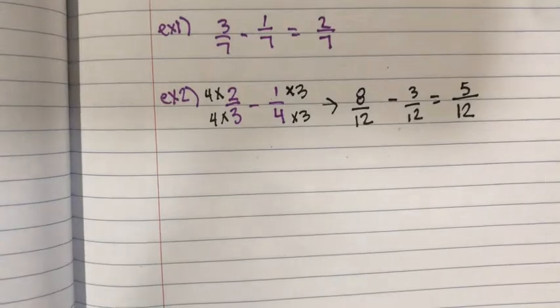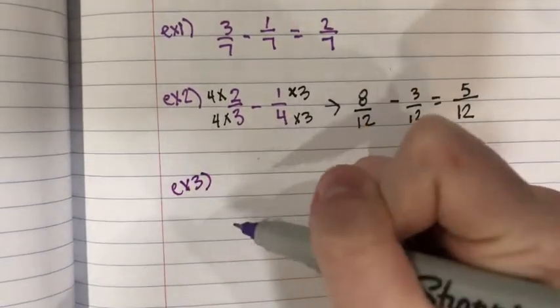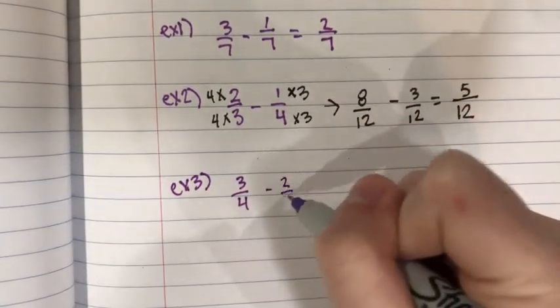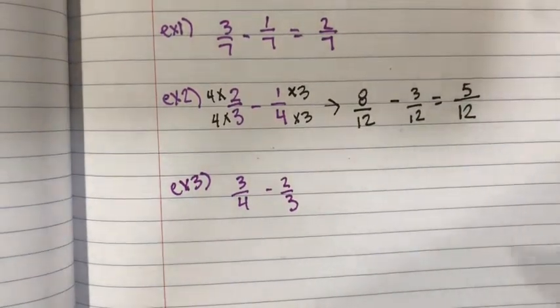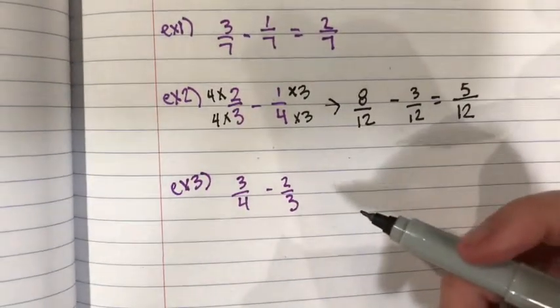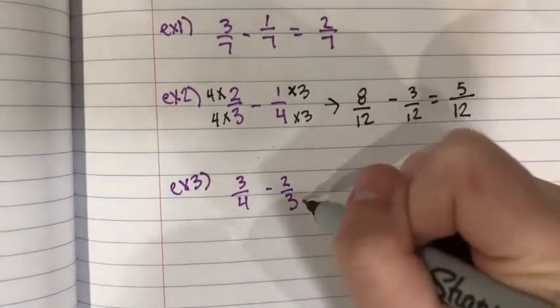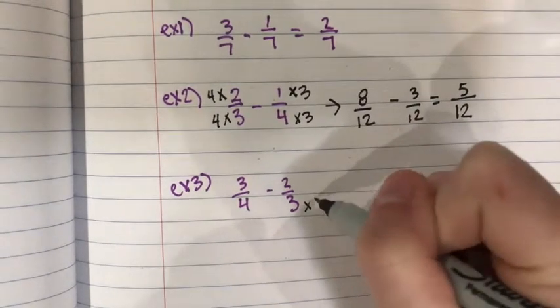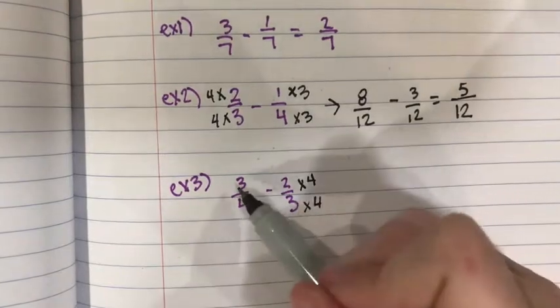The next example that we are going to do is 3 over 4 minus 2 over 3. These again don't have the same denominator so we are going to multiply this denominator by the top and bottom of this fraction. And the same with this denominator to this fraction.